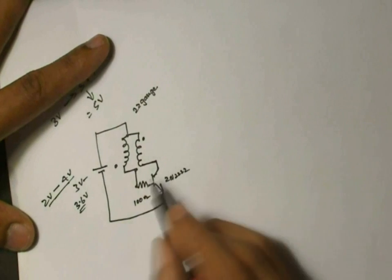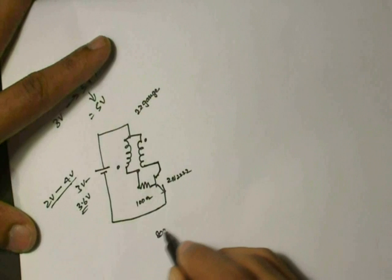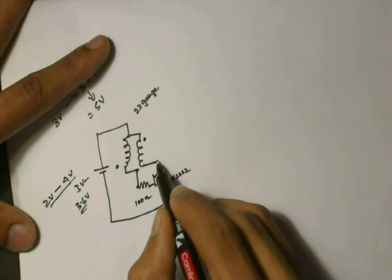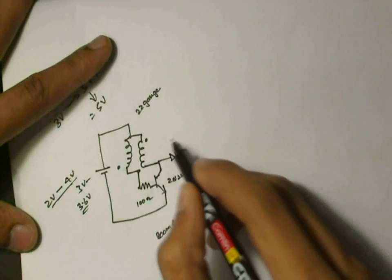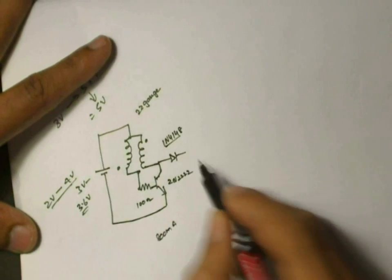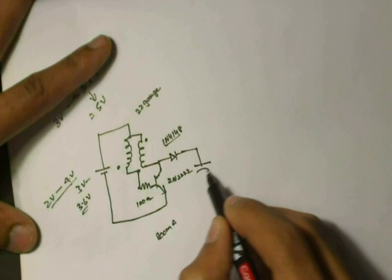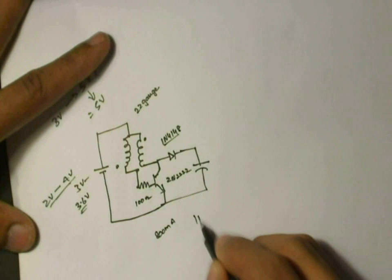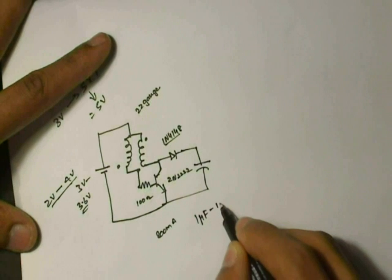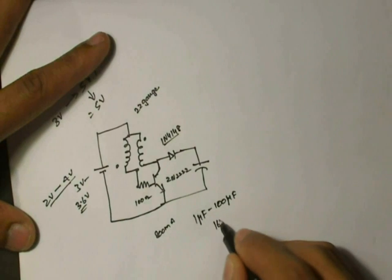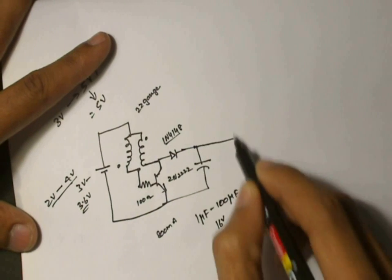This is a 2N2222 transistor which is a high power transistor which can handle a current of about 800 milliamps maximum. From this Joule thief output I'm going to connect a diode, a 1N4148 high speed switching diode, and here I connect a capacitor. This capacitor is electrolytic, preferably one microfarad to around 10 to 100 microfarad, voltage of around 16 volts rating.